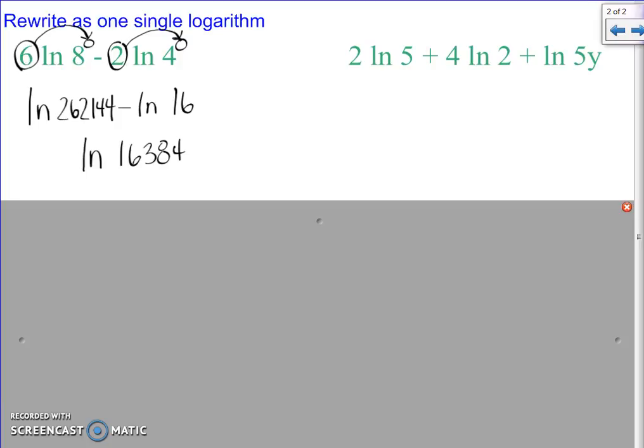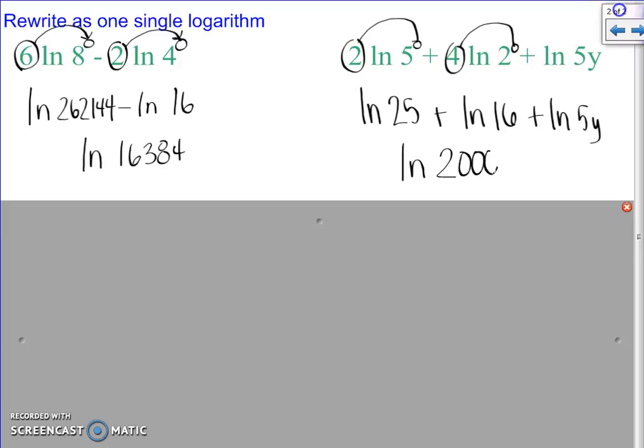Looking over here, looks like we have a few numbers here that we can change into exponents. So we've got ln, this becomes 25 plus ln 16, and this one doesn't change, plus ln 5y. When we have addition in between logs and we pull them together, what do we have to do with our numbers and variables? We have to multiply them all. 25 times 16 times 5y equals 2,000y. Rules are the same, which is kind of nice.